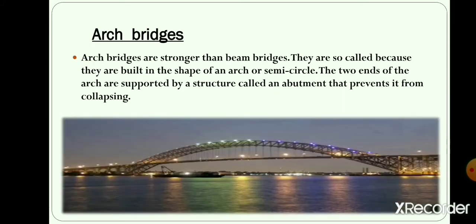Arc bridges are stronger than beam bridges. An arc bridge is made of steel, concrete, and bricks. It has a semi-circular structure with many arcs supporting its weight. These arcs sometimes have shops and markets in them. These days, steel, brick, and concrete are used to build them. The arc bridge is the ideal choice if the foundation of the earth is tough and strong. The Sydney Harbour Bridge in Australia and the Zhingwang Bridge in China are examples of arc bridges.